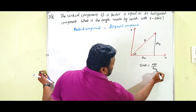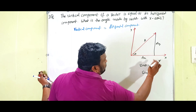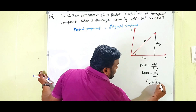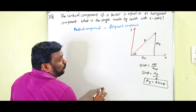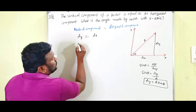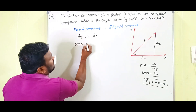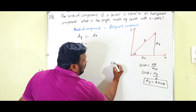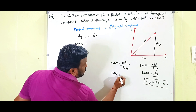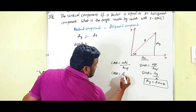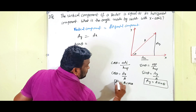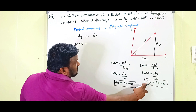From the diagram, sine theta equals opposite side by hypotenuse, so sine theta equals A_y divided by A, meaning A_y equals A sine theta. Here A_y is the vertical component. Similarly, cos theta equals adjacent side by hypotenuse, so cos theta equals A_x divided by A, meaning A_x equals A cos theta.